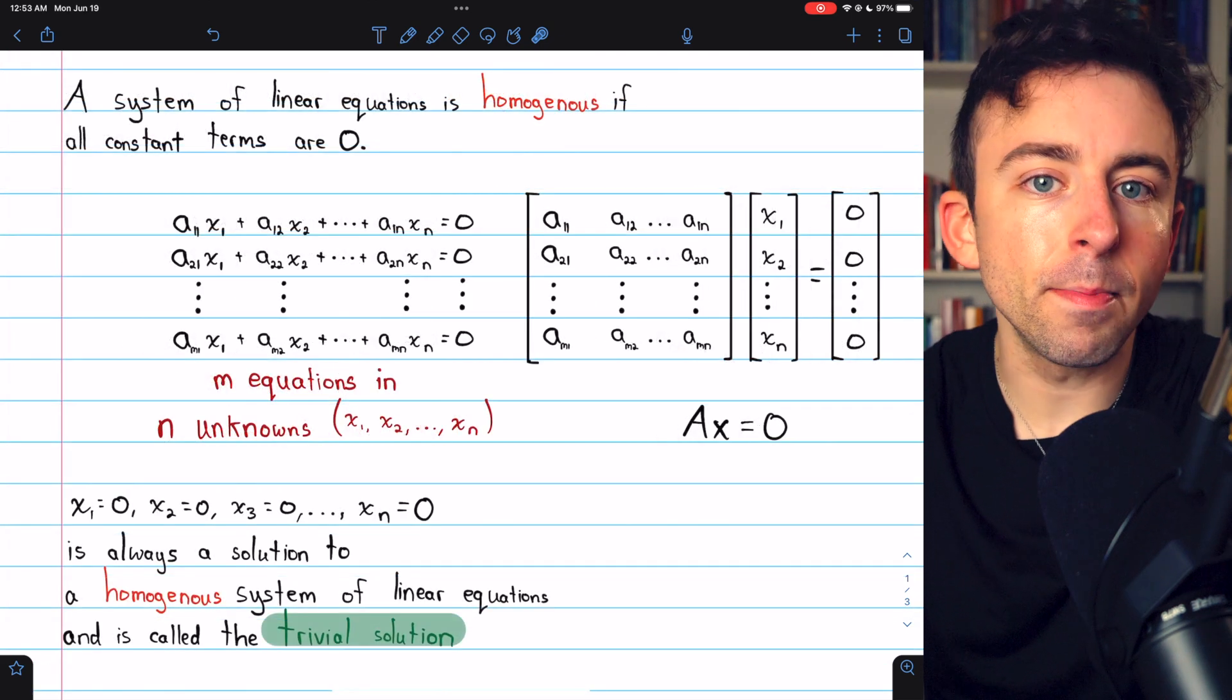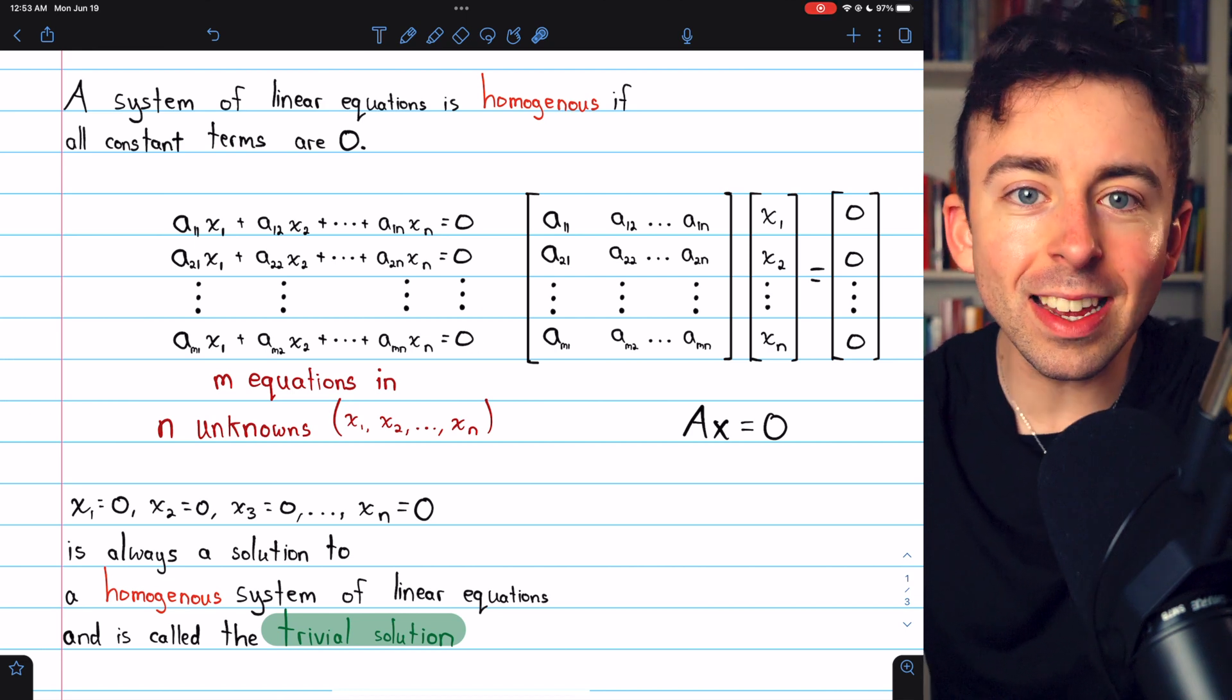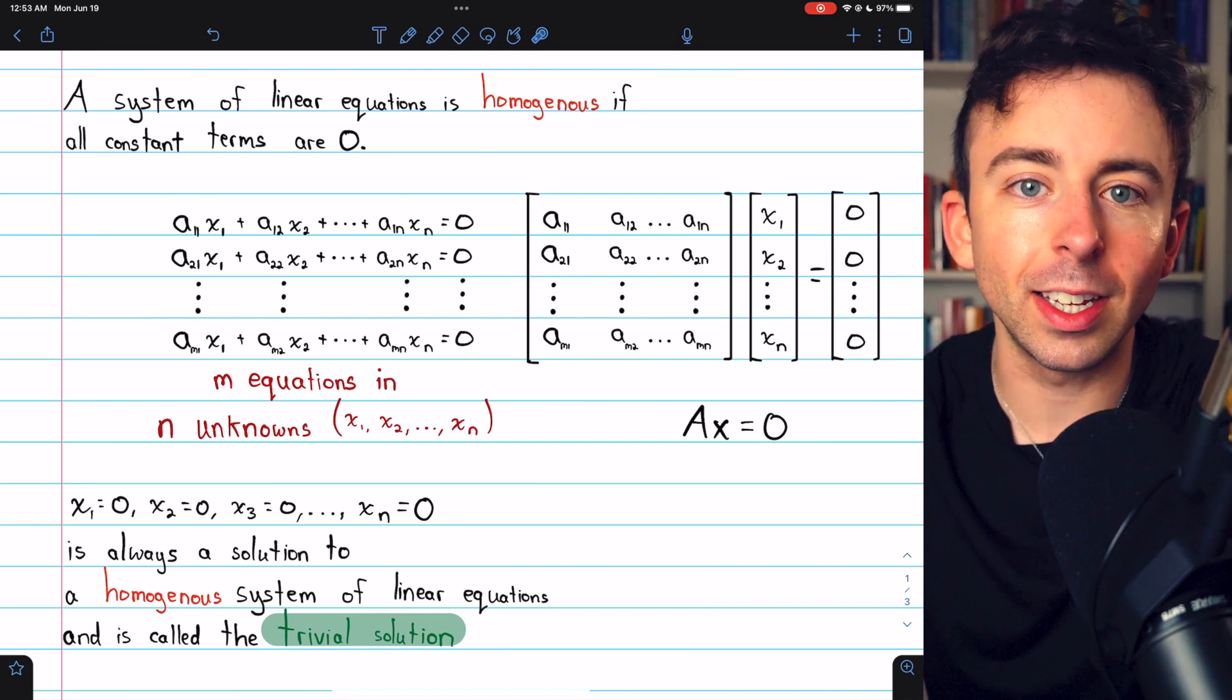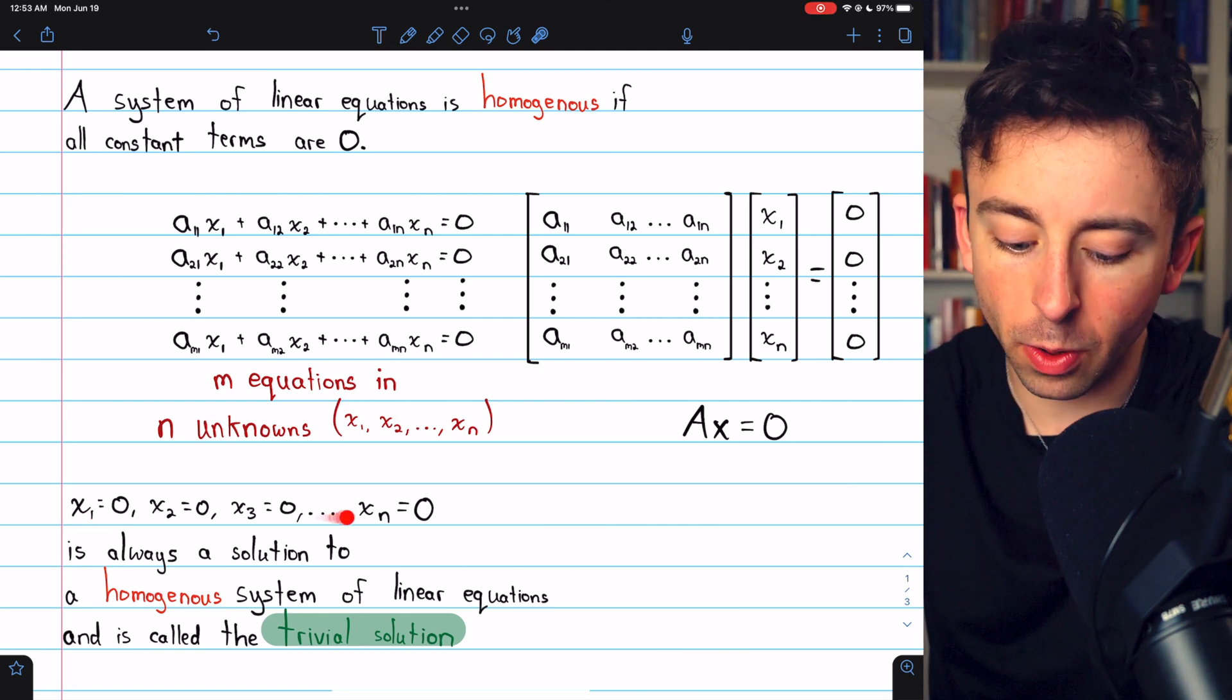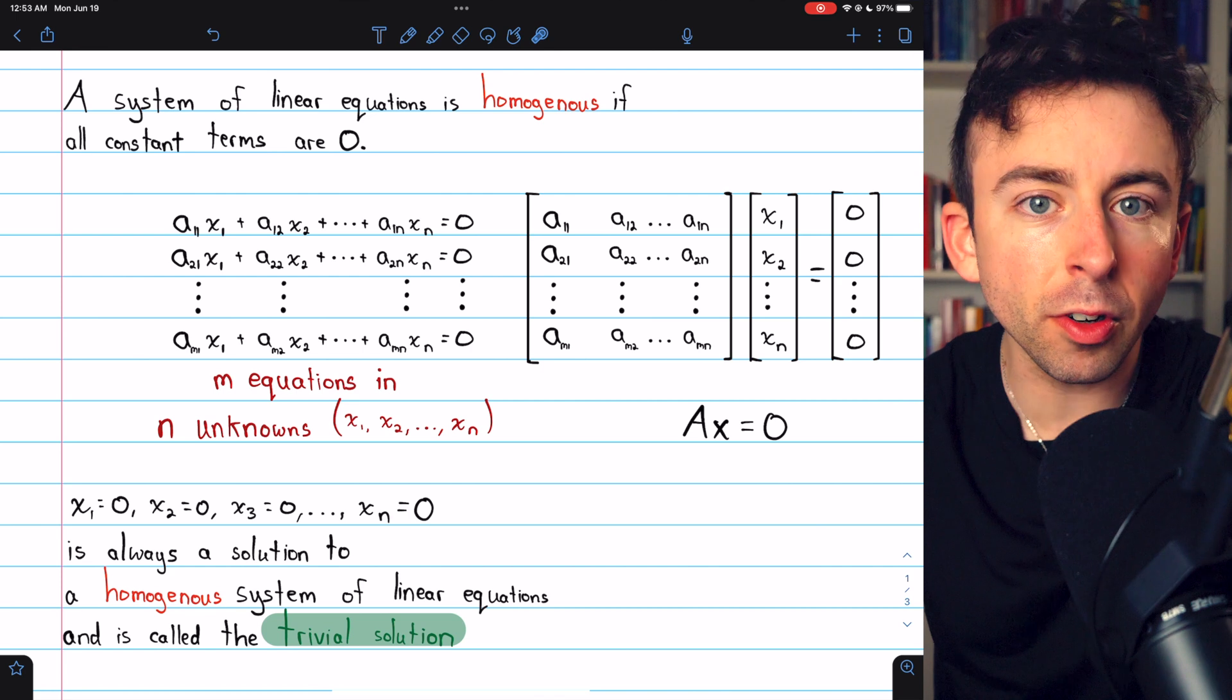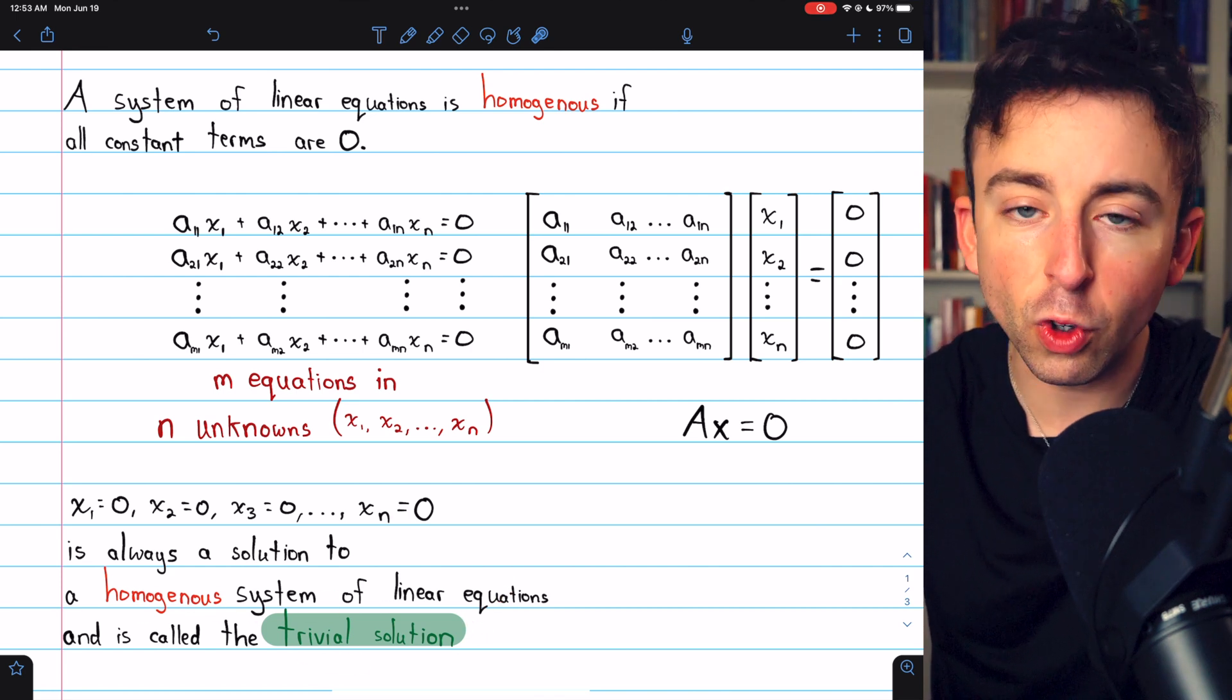Firstly, thanks to the simplicity of a homogeneous linear system, all of the constants are zero, it's easy to see that every homogeneous linear system is consistent. We can set all of the unknowns equal to zero, and that will certainly be a solution to the system. This is called the trivial solution.